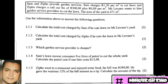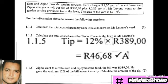Question 1.1.5: Zippo went to a restaurant and enjoyed some food. The bill was R389. He gave the waitress 12% of the bill amount as a tip. Calculate the amount of the tip. We need to find 12% of R389. Entering this into our calculator — 12% times 389 — we arrive at R46.68.